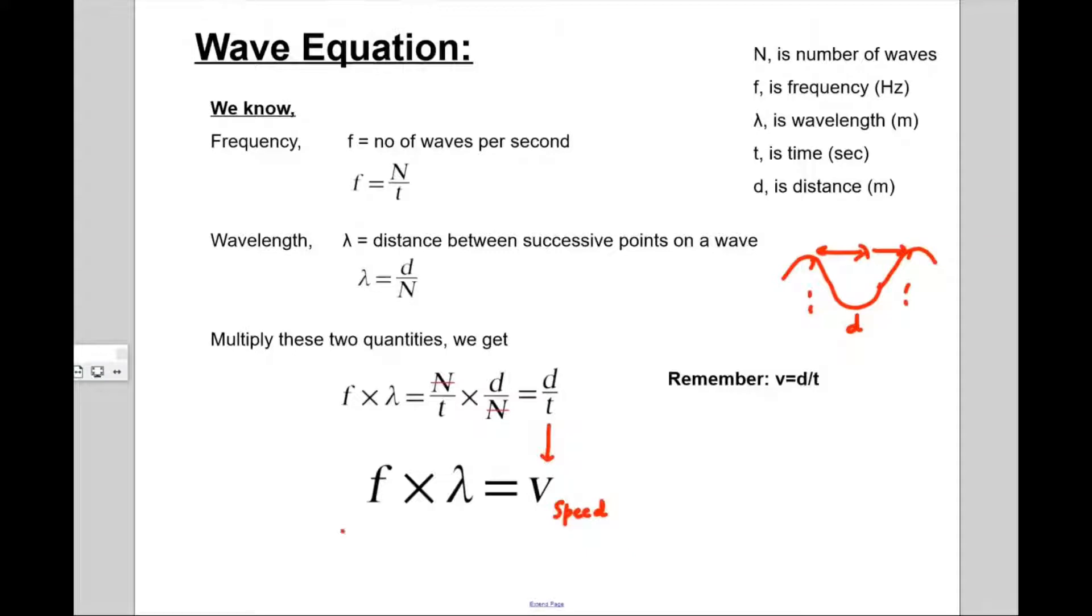So the wave equation gives you the relation between frequency, wavelength and the speed of the wave. It basically relates these three quantities.